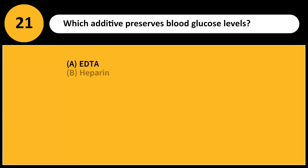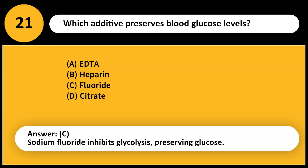Which additive preserves blood glucose levels? A. EDTA. B. Heparin. C. Fluoride. D. Citrate. Answer: C. Sodium fluoride inhibits glycolysis, preserving glucose.